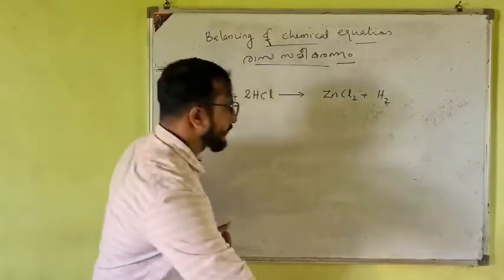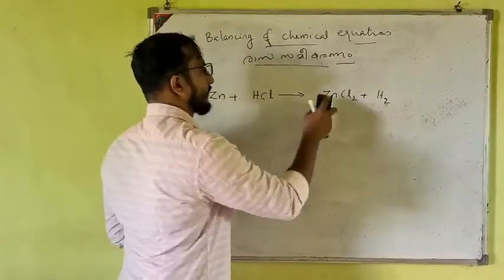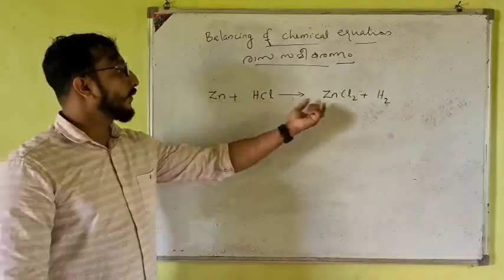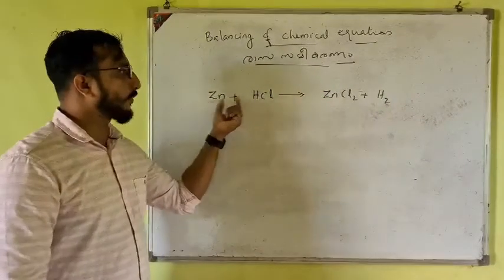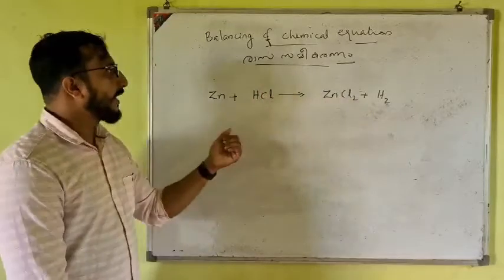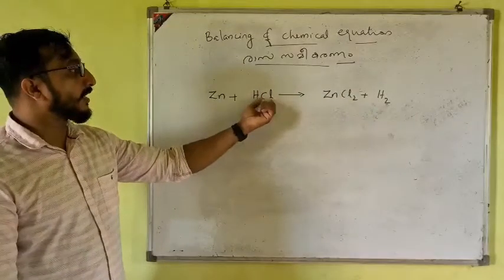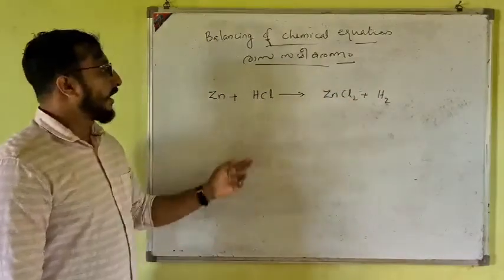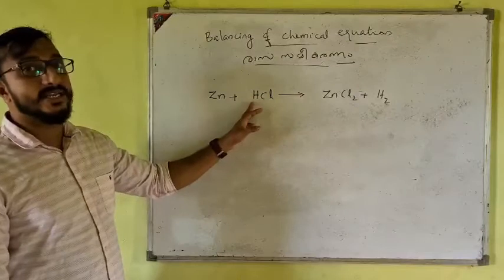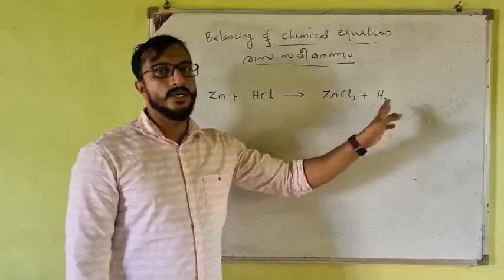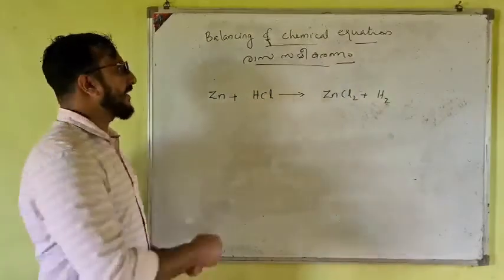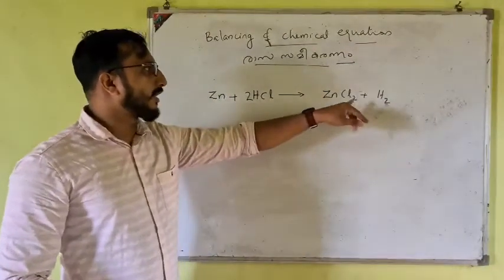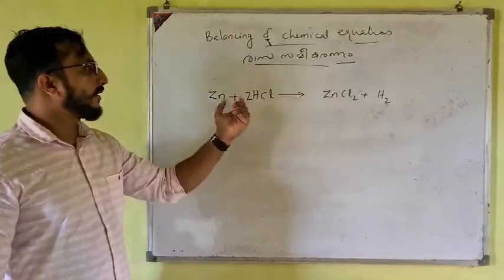Before balancing: on the reactant side of hydrochloric acid there is 1 hydrogen and 1 chlorine. On the product side there are 2 chlorine. To balance hydrogen, we place a coefficient of 2 in front of HCl on the reactant side, giving 2 hydrogen and 2 chlorine — then the equation is balanced.